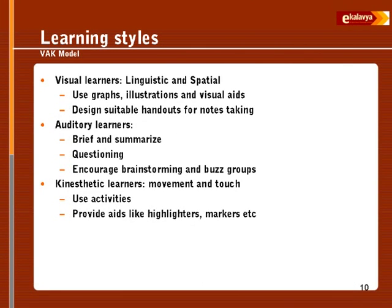Now we come to another kind of model different from Kolb's — the VAK model. VAK stands for visual learners, auditory learners, and kinesthetic learners. Touch and smell are not important for classroom purposes, though there is some research on learning with certain types of odors. Mostly literature talks about the VAK model: visual, auditory, and kinesthetic.